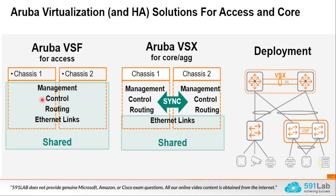In VSF, the management, control, routing, and data planes are all shared — it supports up to eight or ten switches in a stack. Once the VSF stack is formed, you see all ports of stack members as a single logical switch. In VSX, management, control, and routing planes are synchronized rather than shared; only the data plane is shared. VSX is a dual control plane technology and supports only two switches. Therefore VSF provides a single control plane.